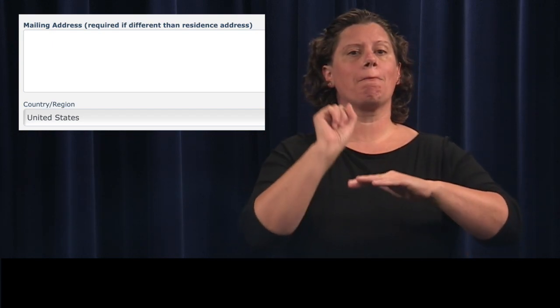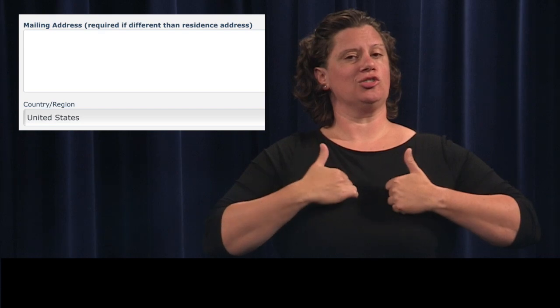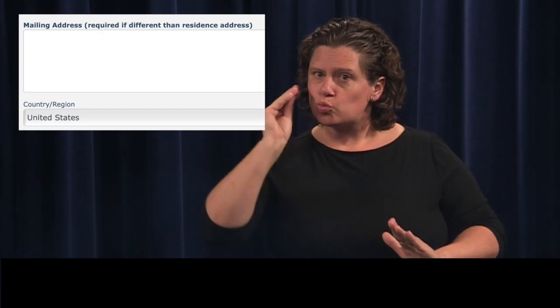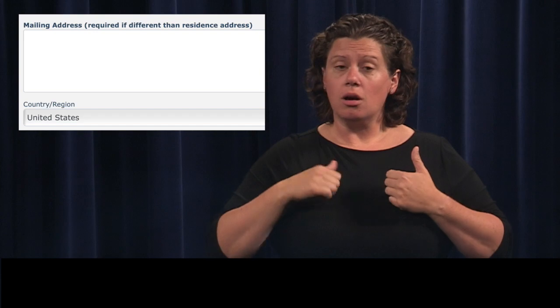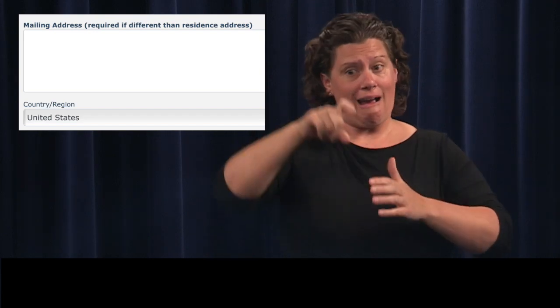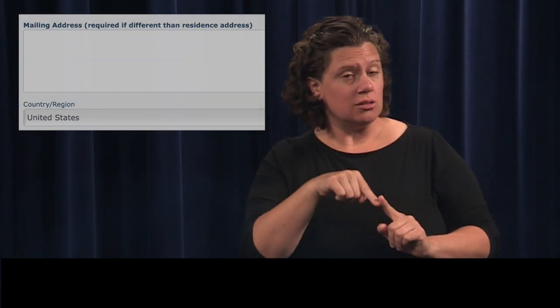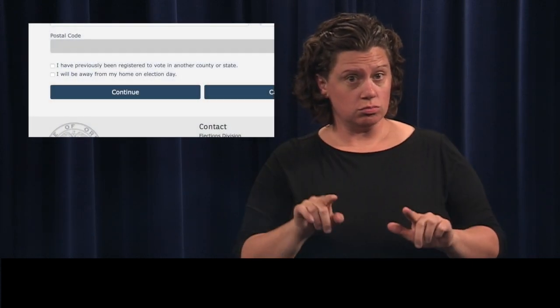Enter the desired address in the Mailing Address field. This can be different than your residential address. This does not have to be an Oregon address or even an address in the United States. This is where your ballot will be sent for the next election.